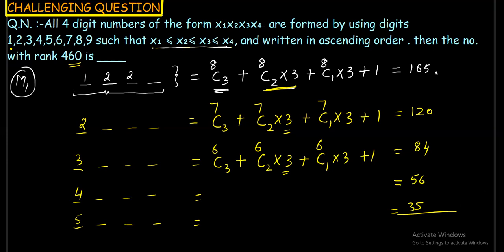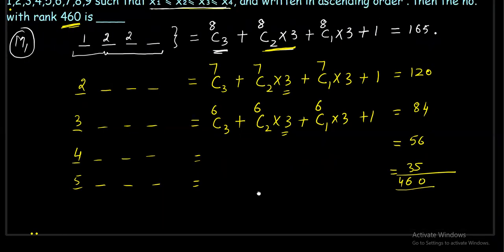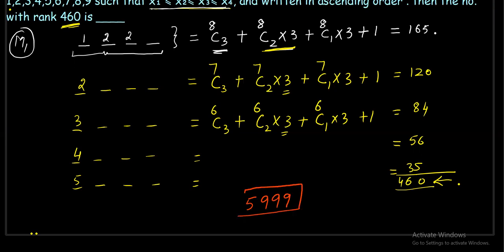Since the cumulative sum equals exactly 460, the number at rank 460 is the very last number starting with 5. In ascending order, the last 4-digit number starting with 5 with digits from 1–9 and non-decreasing digits is 5999. So the answer is 5999.